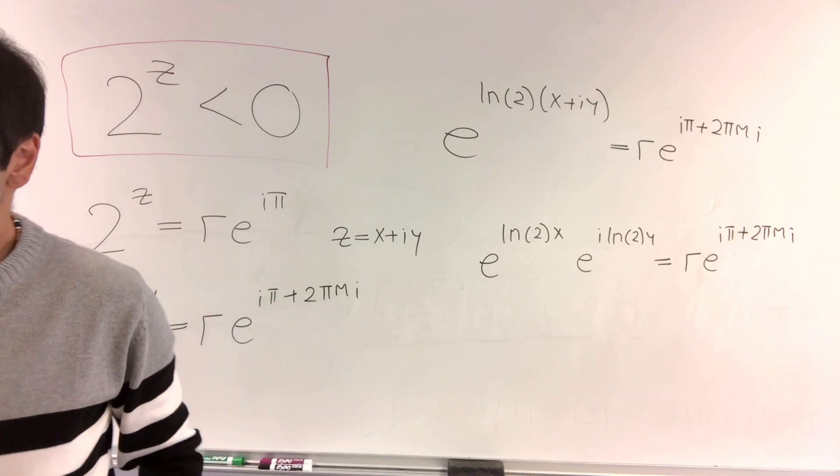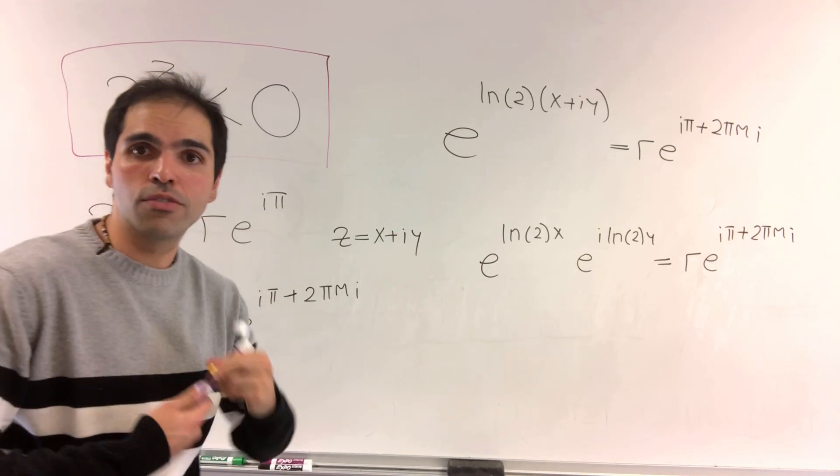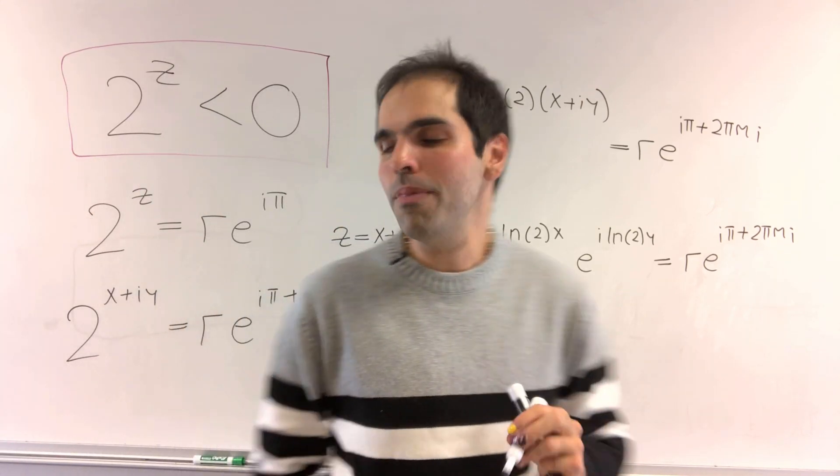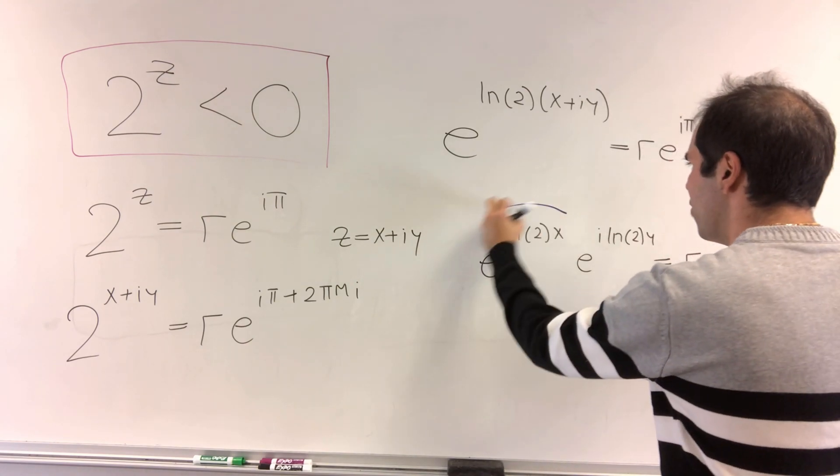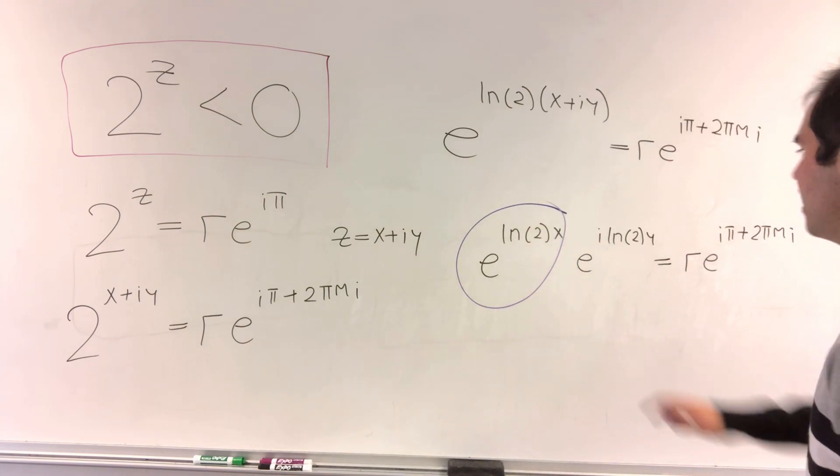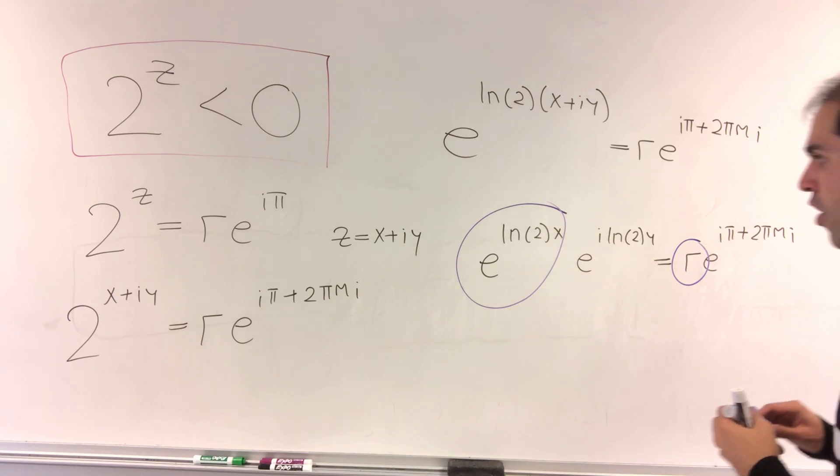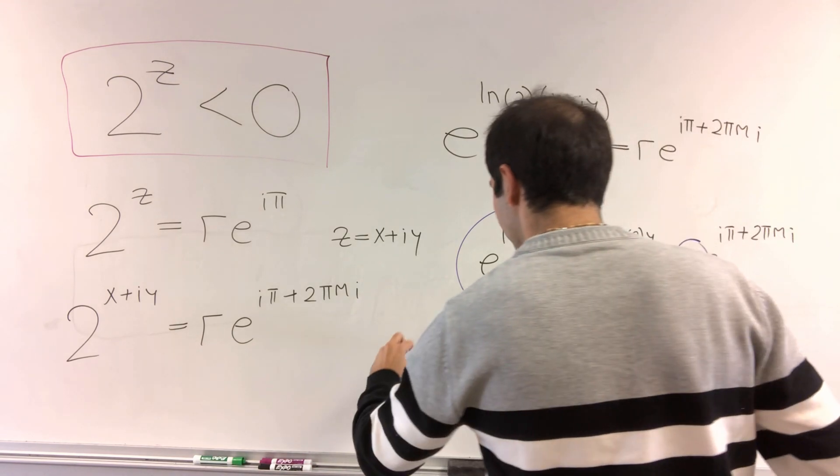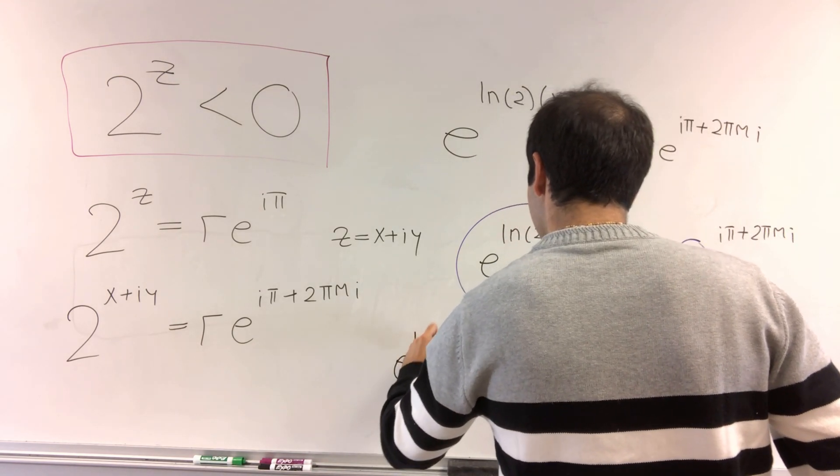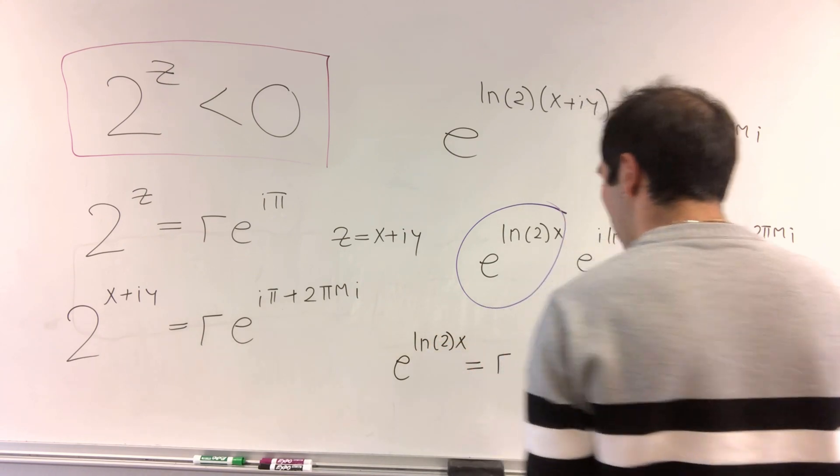and that is r e to the i pi plus 2 pi m i. And now, the nice thing is, you can nearly compare the real exponentials and the complex ones. So now what we get is e to the ln of 2 x equals r, and that helps us solve for x.